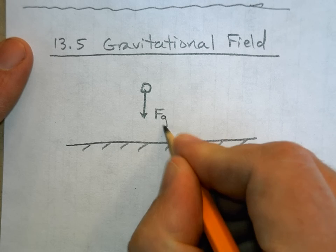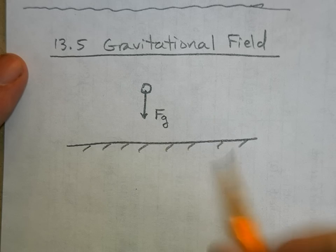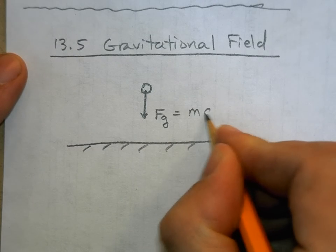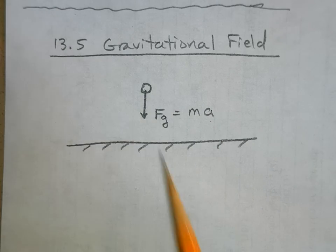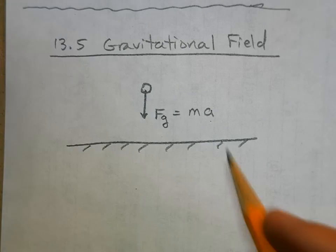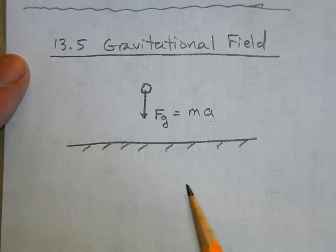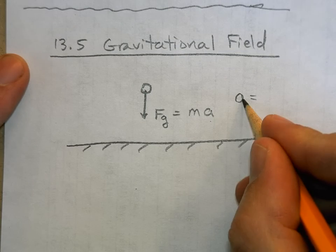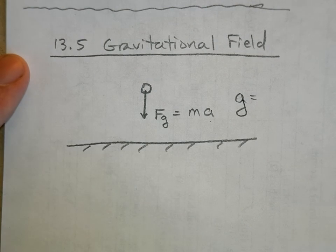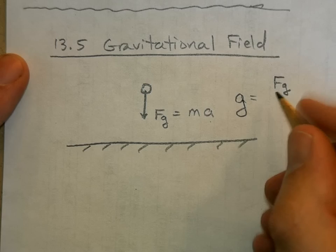If this is the only force acting, then this is the net force and it's equal to ma. This is the acceleration due to gravitational pull. Let's solve this for the acceleration. The acceleration of gravity, so we can call it g instead of a, is the force of gravity divided by the mass of the object.